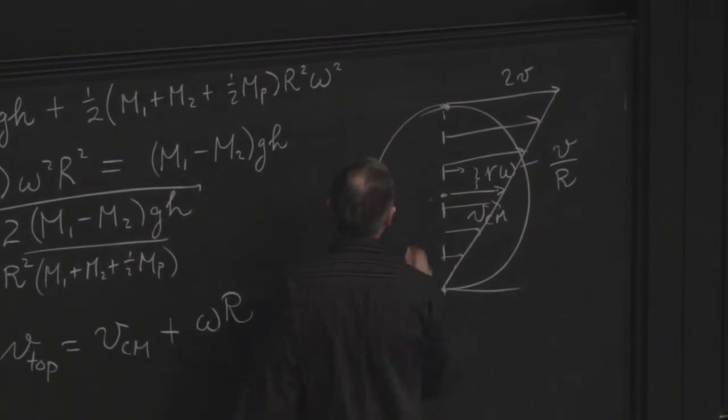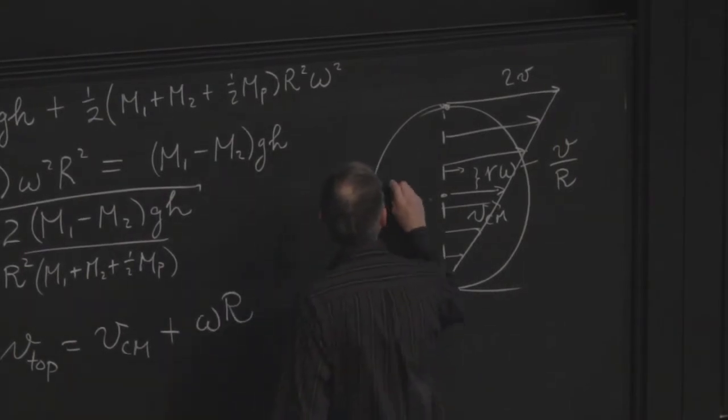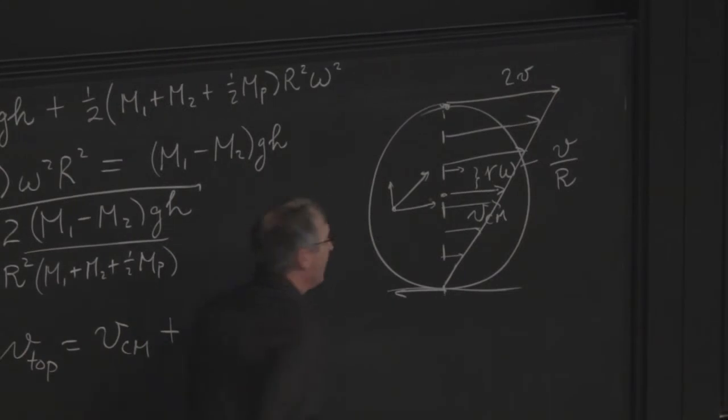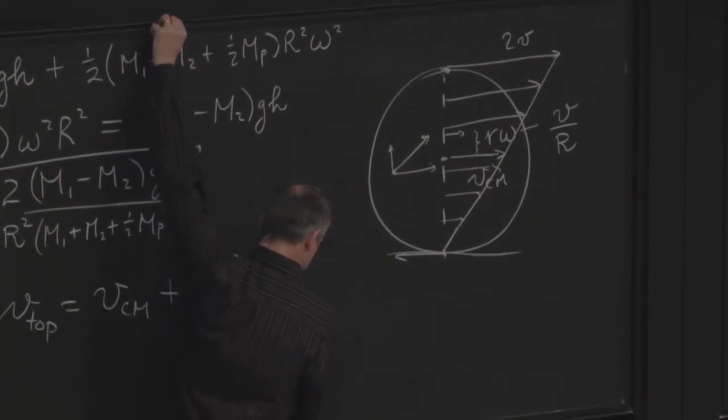So the bottom point is instantaneously at rest. The top point is moving at twice the speed of the center. What about some crazy position over there? Well, it gets the center's translation, but it's also moving with respect to the center. And I have to add up those two. This is going to be complicated.